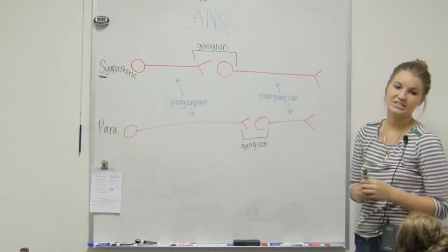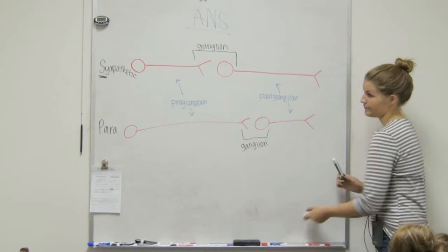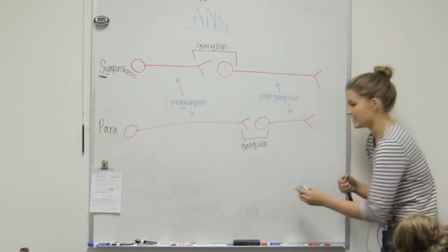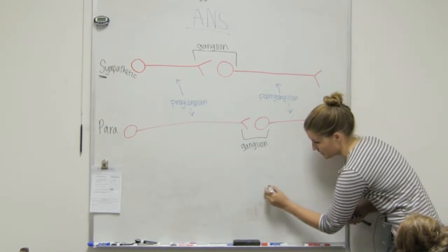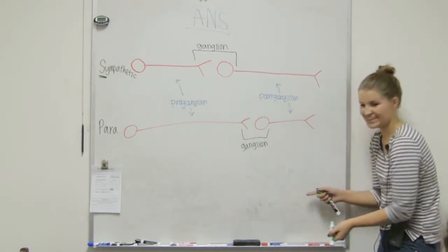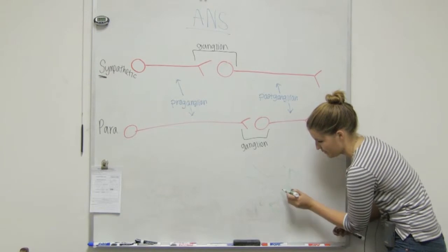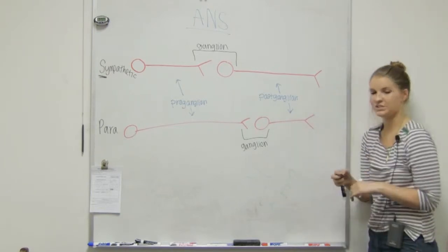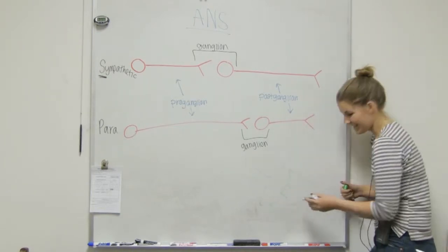And then each of these are going to secrete different things. Because these are neurons, just kind of like your neuromuscular junction. Do you remember this picture? Yeah. Where acetylcholine came down, and it binded to a sodium ligand gate.